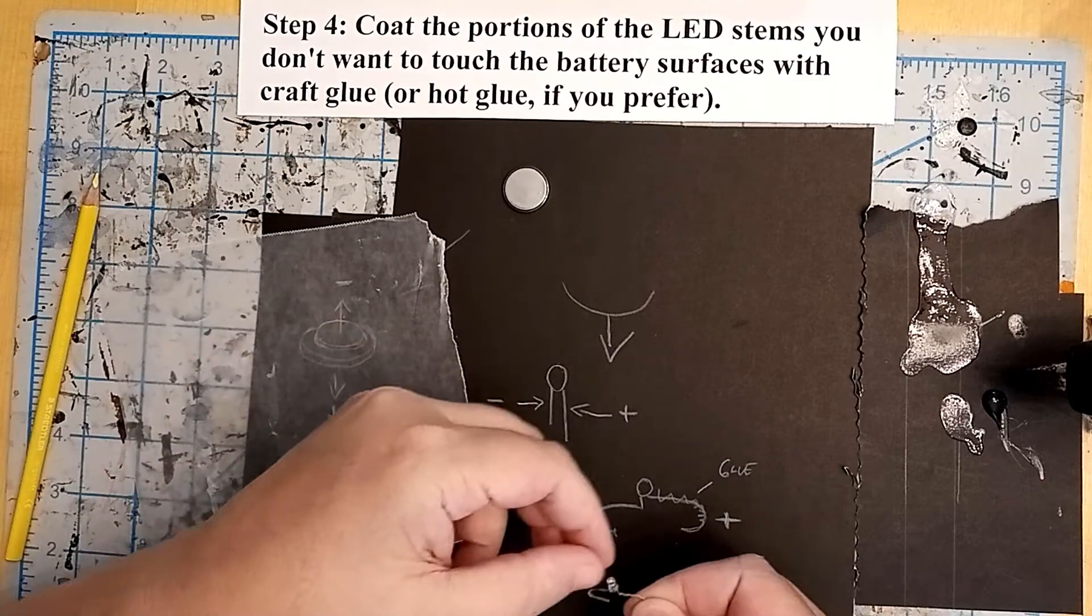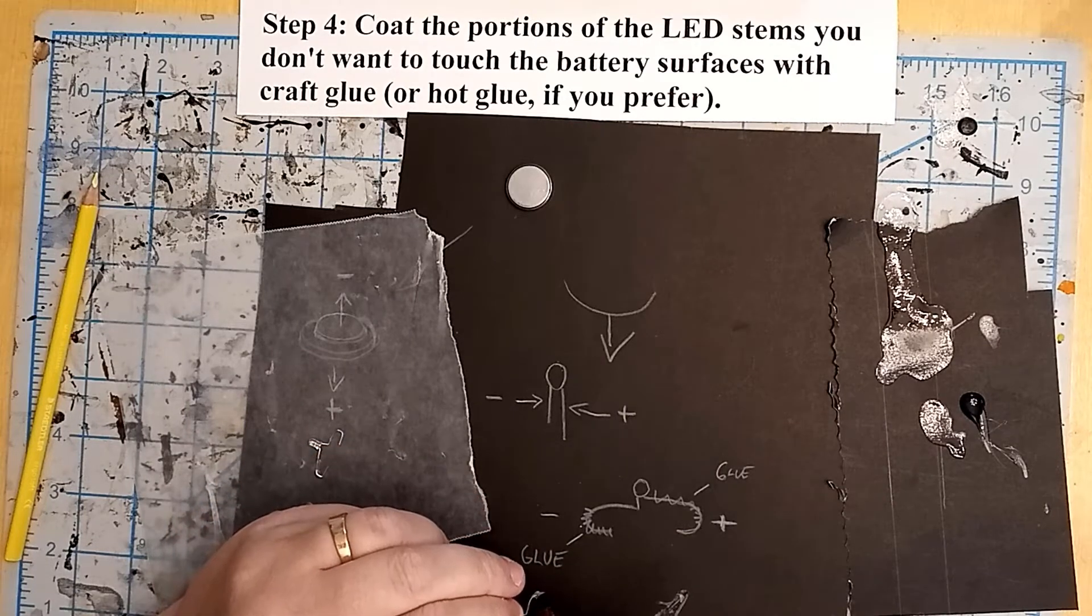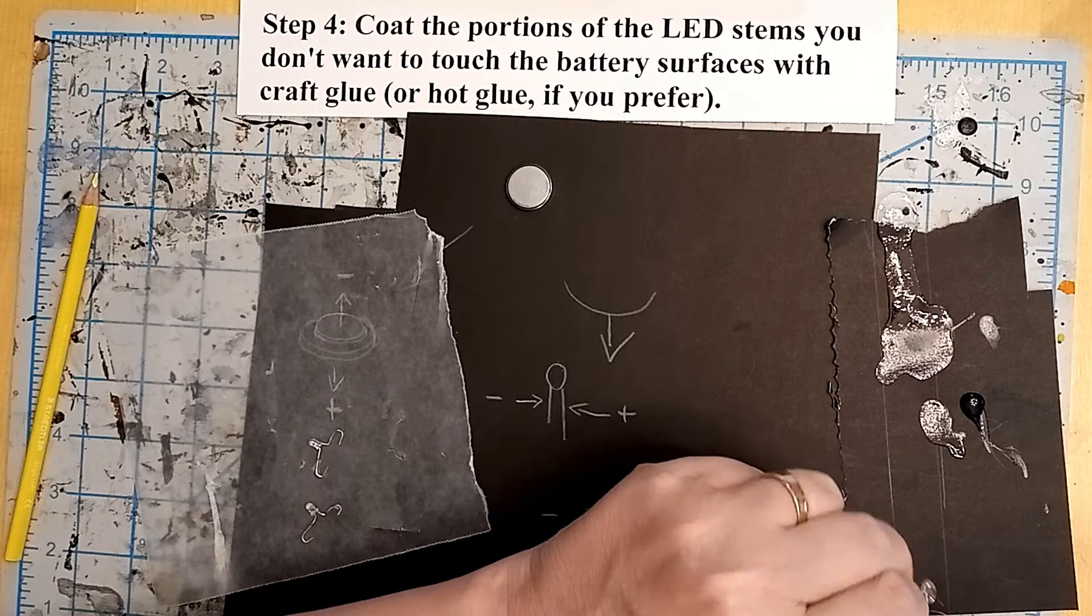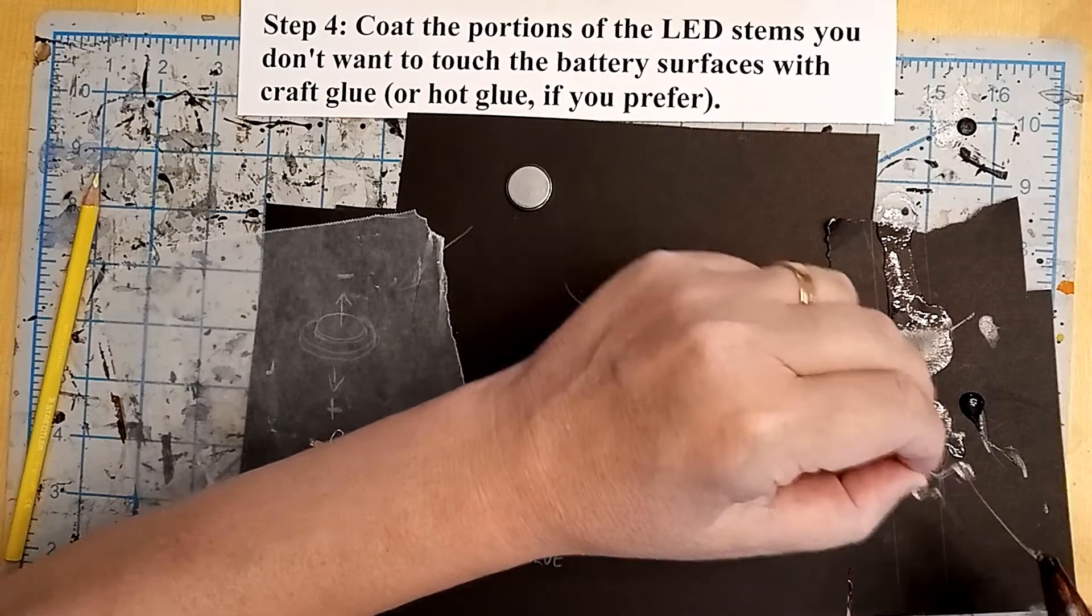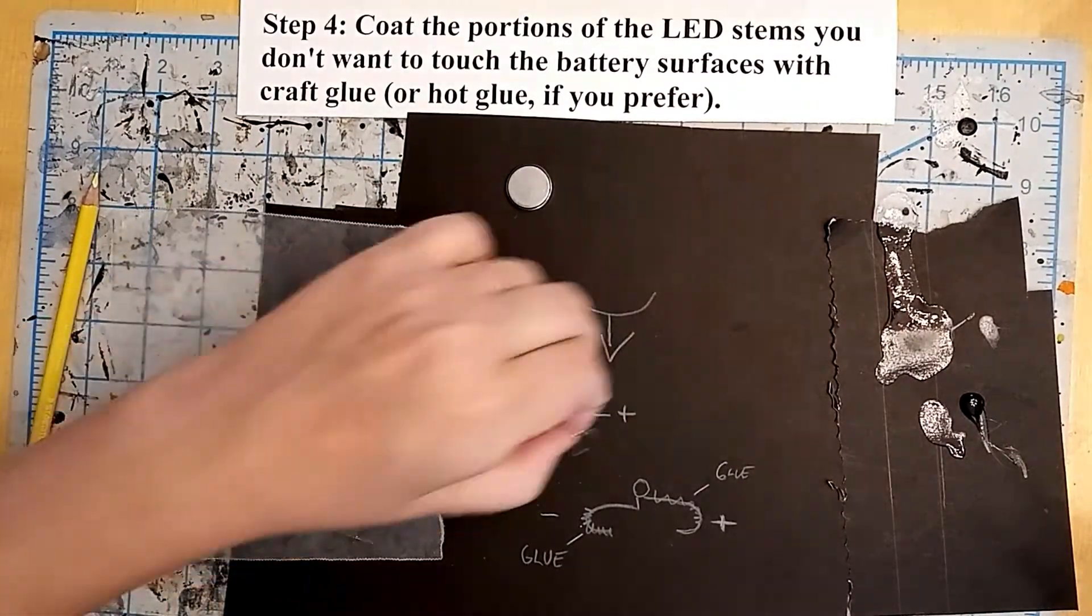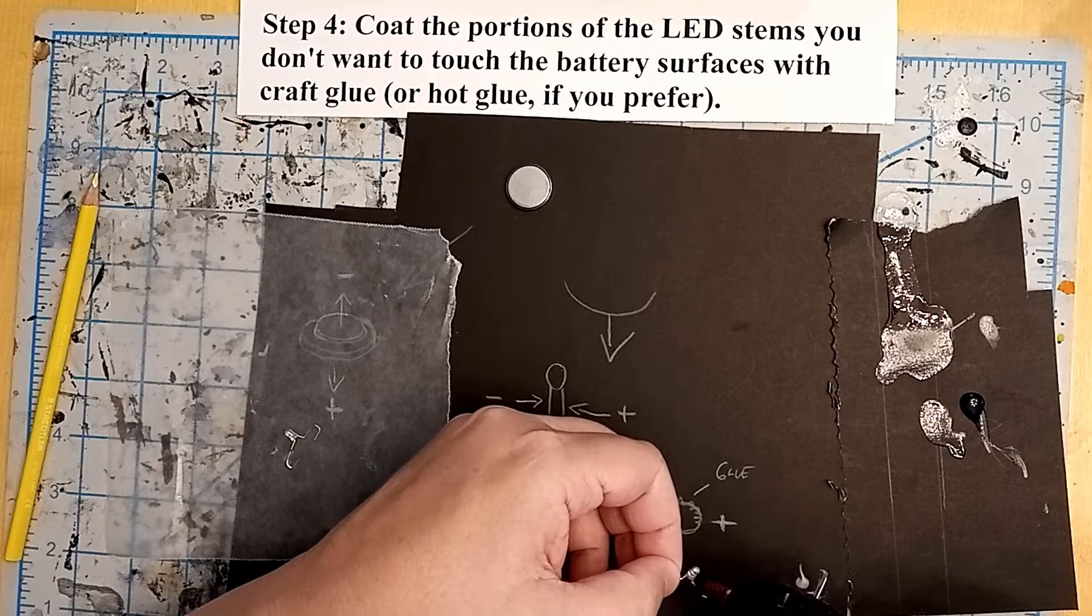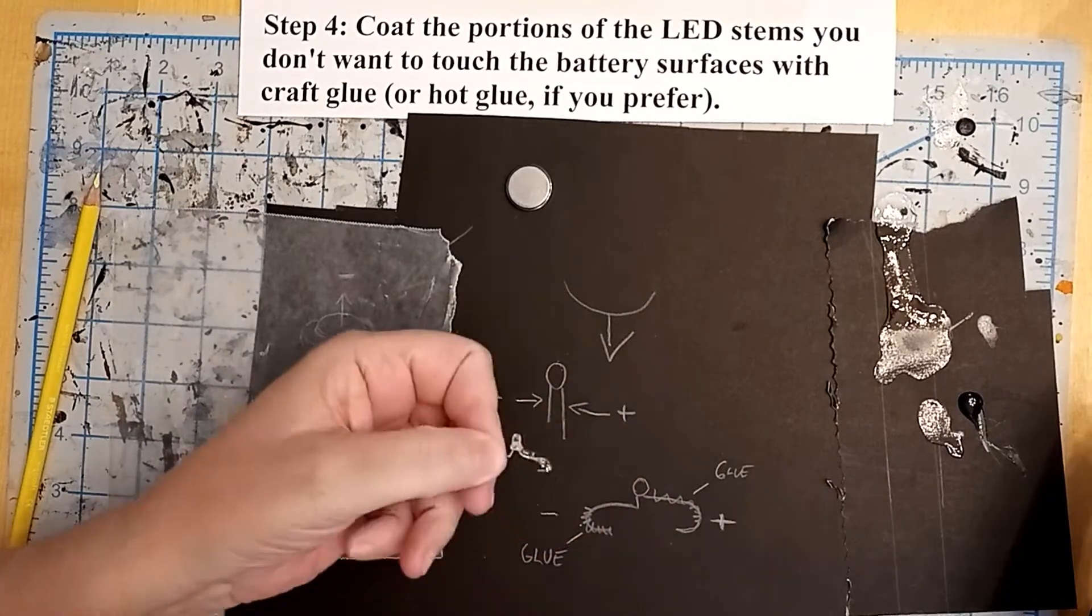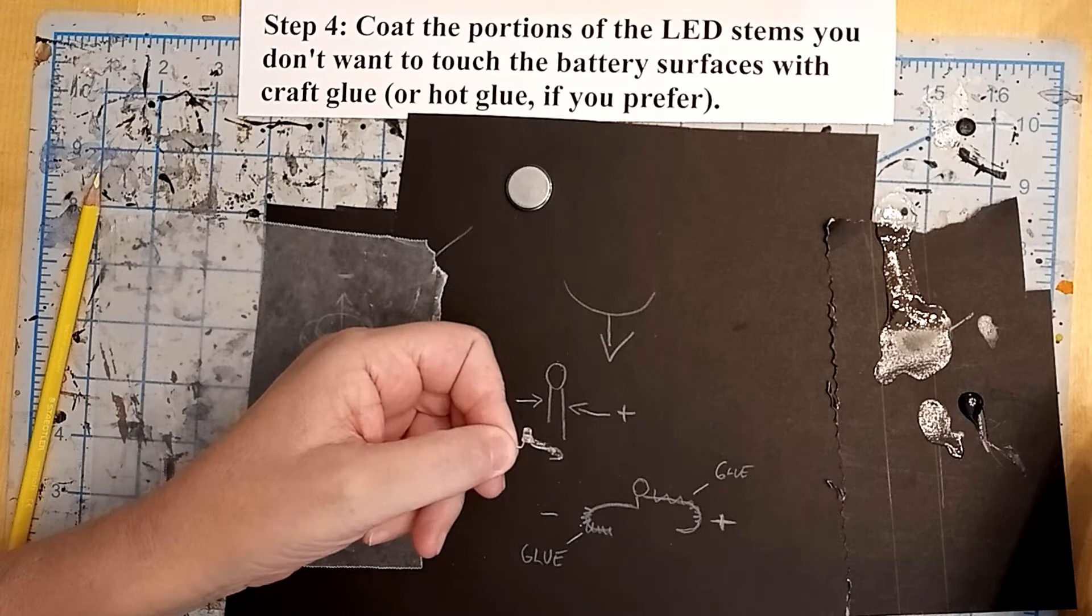So now what I'm going to do is coat the parts of the leads that I don't want contacting the battery with hot glue so that there is no conduction. That means when I slide these onto the battery after the fact, they should light up. We'll test that before we're done here. Pardon my off camera work. Just squeezing hot glue onto the parts of those leads that I don't want contacting the battery. I made a mistake there. I'll start with this one. I don't want the top of the positive lead to touch the rounded negative portion of the top of the battery, so I put hot glue there.